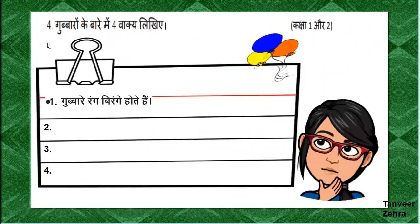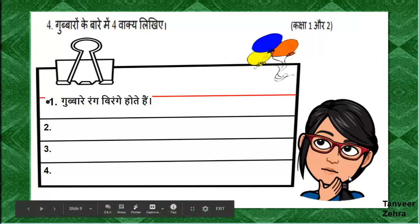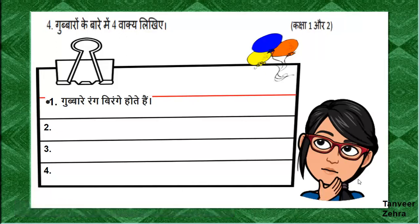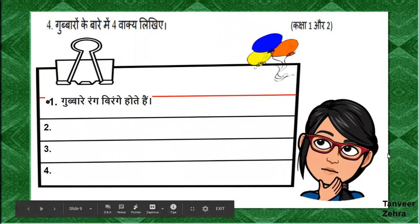The fourth question has four parts about balloons. We will do the first and second parts. The balloons in the first question are red. If you have three questions, you can write about them. Write your answers and send them to your teacher.